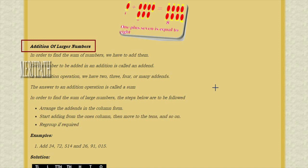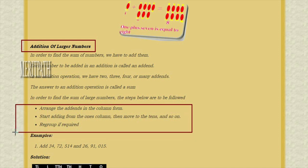Addition of larger numbers. Each number to be added in addition is called an addend. In an addition operation, we can have two, three, four, or many addends. The answer to an addition operation is called the sum. To find the sum of larger numbers, follow these steps: arrange the addends in column form; start adding from the ones column; then move to tens and so on; regroup if required.